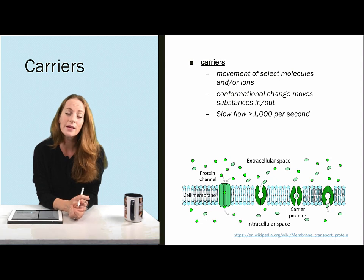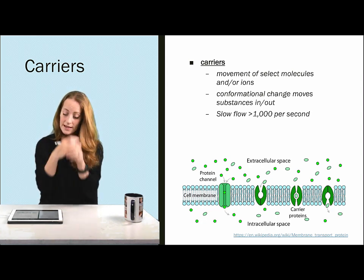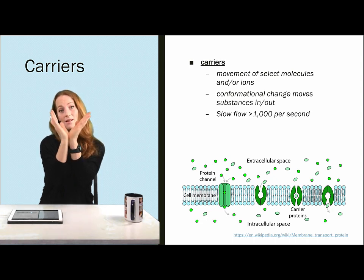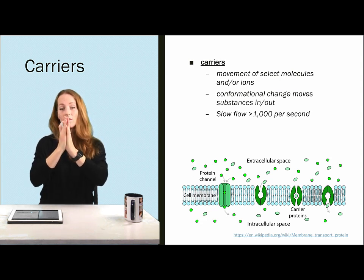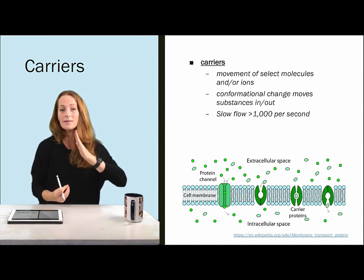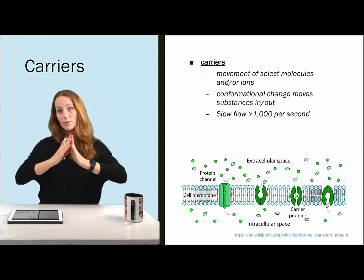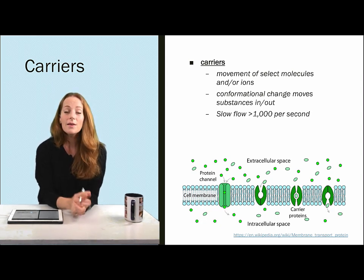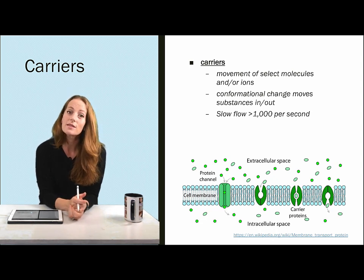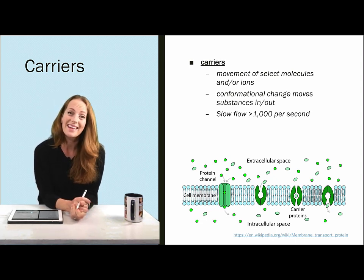Carriers, by contrast, don't form a complete passageway between intracellular and extracellular space. A carrier binds a specific molecule on one side of the membrane, then changes conformation to open to the other side, releasing that molecule. There's never a continuous passageway — it's a conformational change that binds a molecule and releases it to the other side. Because of this binding and conformational change, carrier molecules are much slower, on the order of 1×10³ molecules per second. Some transport proteins fall somewhere between channels and carriers.